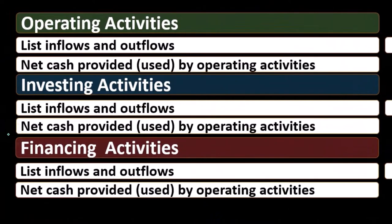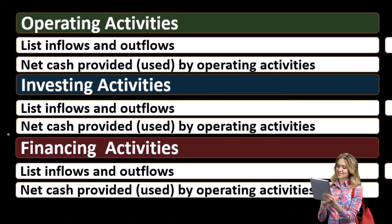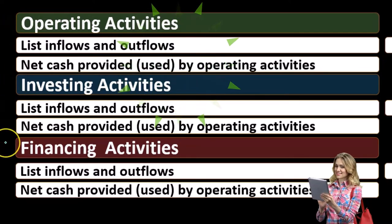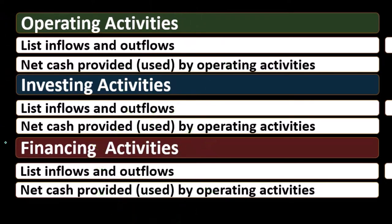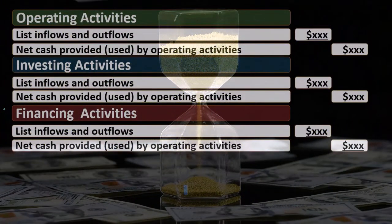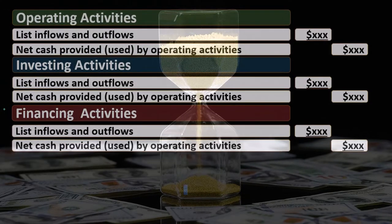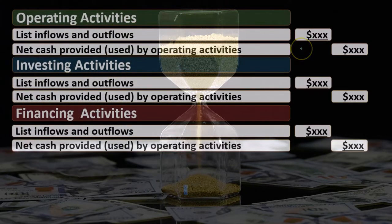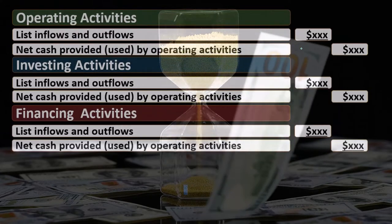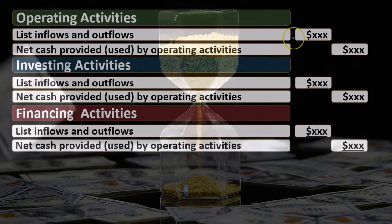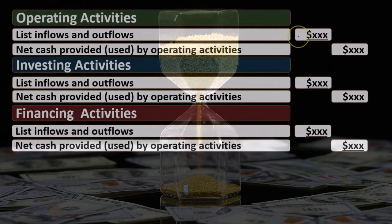Those are going to be the three categories. When we put information into these three categories, we need to think about our worksheet and ask: where is each activity going to go — is it operating, investing, or financing? Whenever we think about the cash flow statement, we always want to be thinking operating, investing, and financing — and which area do the cash flows we have fit into. We'll discuss a thought process on how to do that. The typical format lists accounts in the inner column and gives a subtotal.